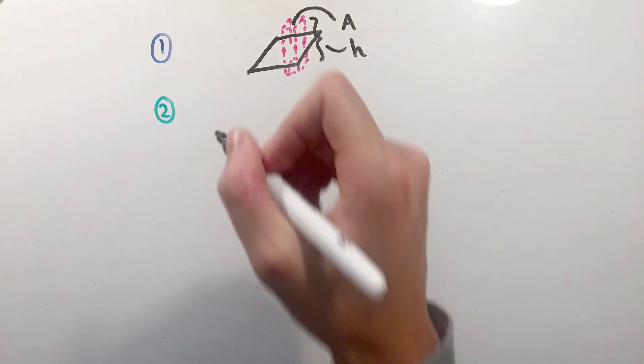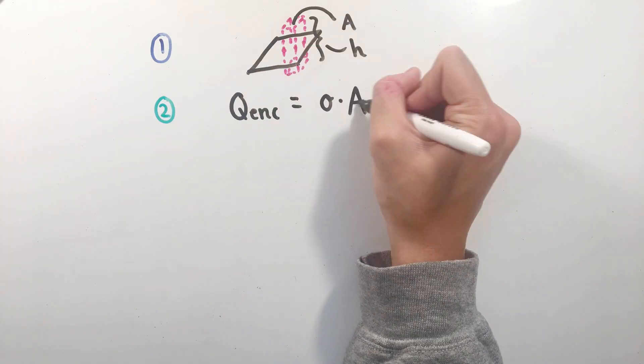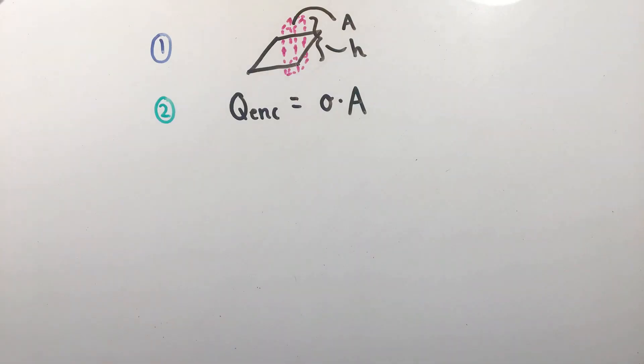The charge, once again, is not too hard to find. It's just the density sigma times the area of the face of our box A. Looking at the flux,